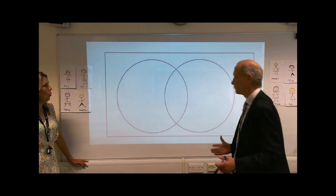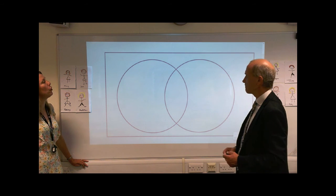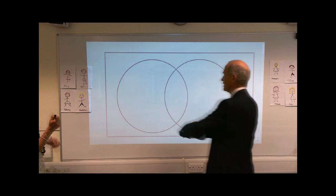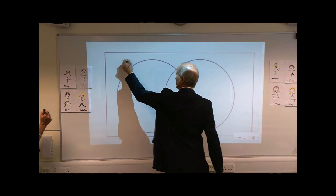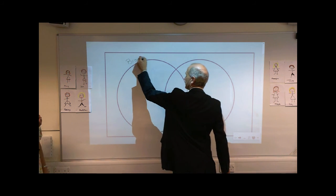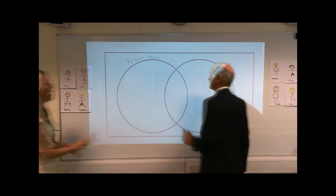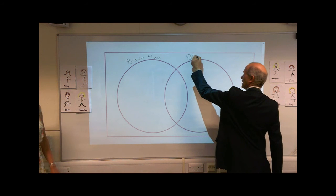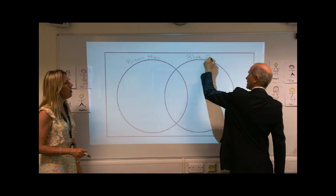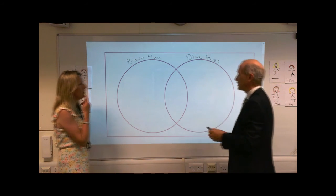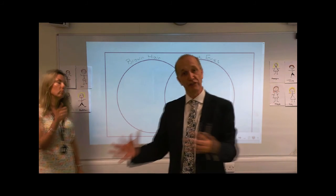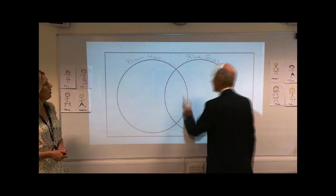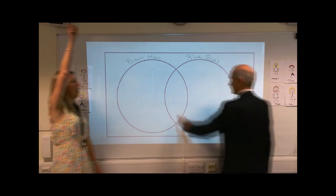What groups should we do? Shall we do hair and eyes? Hair colours and eye colours? Let's go brown hair in this circle, and blue eyes in that circle. And it's always good to label your circles so you don't forget which one is which. So if you've got brown hair, you're going to go in this circle here. If you've got blue eyes, you're going to go in this circle here.